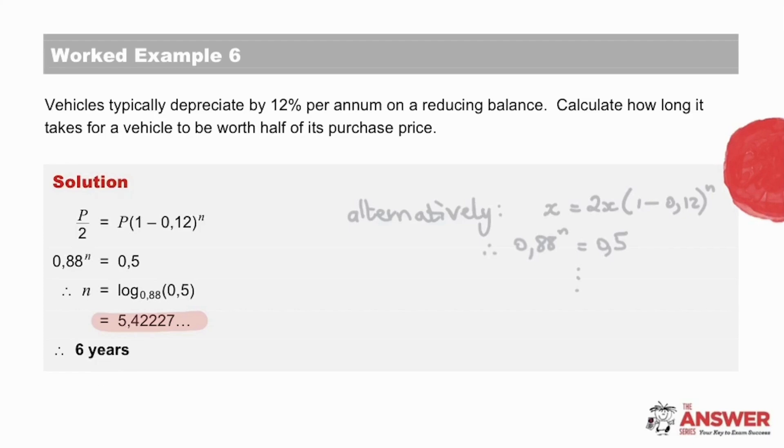If they had wanted a more accurate answer, they would have asked something like, give your answer to 2 decimal places, or something to that effect. Often it is more about getting a feel of how long something will take.